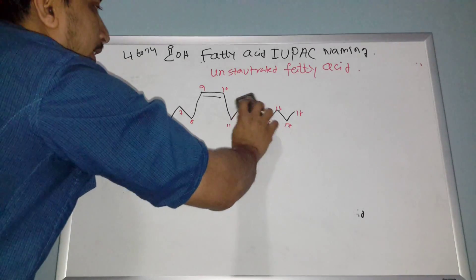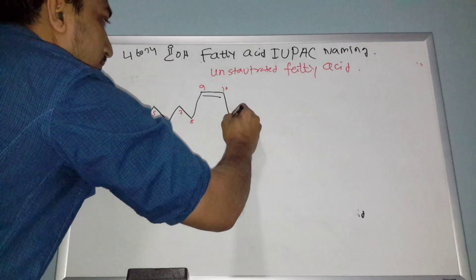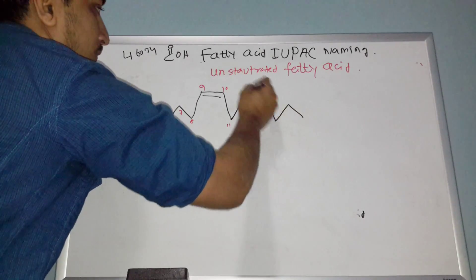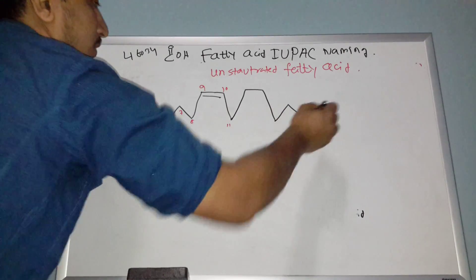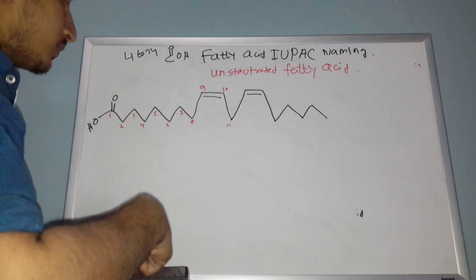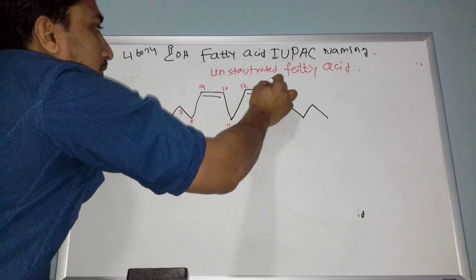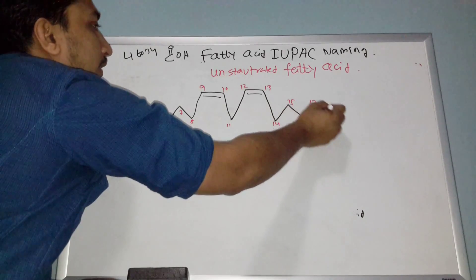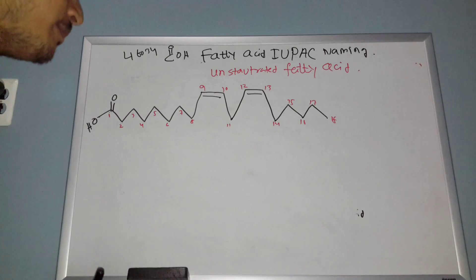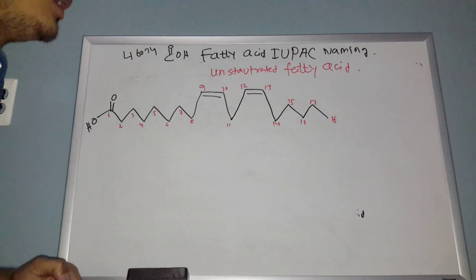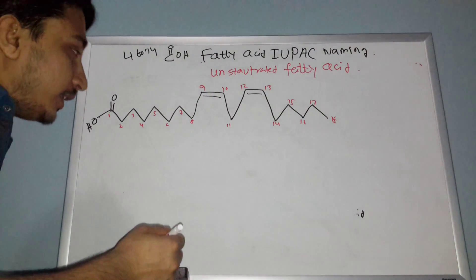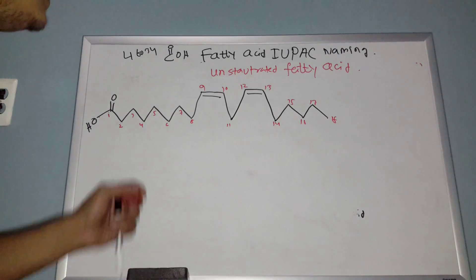Right now I'll draw another example. Counting carbons: 12, 13, 14, 15, 16, 17, 18. Also, always remember that in fatty acids the carbon count is always an even number, not odd. So 18 goes to 20 or 24 — you will not see 17, 15, or 13 carbons. Fatty acids always have even numbers.